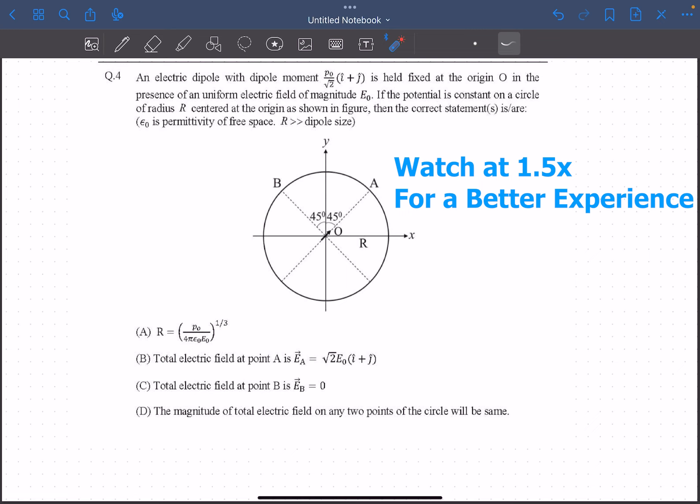This problem is based on the concept of electric dipoles. The problem statement is that we have an electric dipole with a dipole moment of this particular value, held fixed at the origin O. If the potential is constant on a circle of radius R centered at the origin as shown in the figure, then which of the following statements is correct?